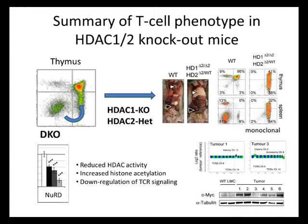If we knock down HDAC activity, you might assume that histone acetylation will go up — and that is indeed the case. We see a three-fold increase in histone H3K9 acetylation. We also did a microarray analysis on these cells and found that genes downstream of the T-cell receptor were downregulated. So we think we're actually downregulating the T-cell receptor signal, and therefore these cells get stuck as immature T-cells — either immature single-positive or double-positive T-cells.